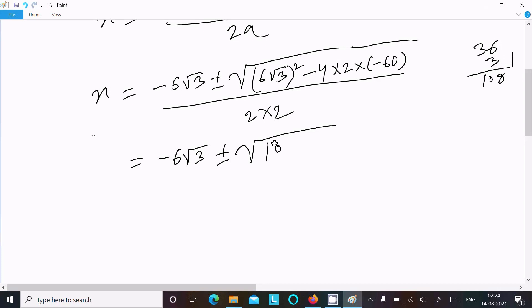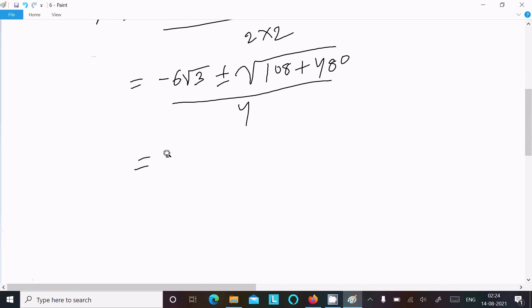Next is minus times minus, which changes to plus. So -6√3 ± √(108 + 480), divided by 4. If you add this one, it comes to 588.